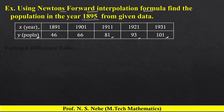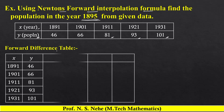इस example में हमें Newton's forward interpolation का formula use करके population find out करना है, means value of y find out करनी है in the year 1895. 1895 की value हमारे table के starting की value है, इसलिए हमें Newton's forward interpolation formula apply करके इस example को solve करना है। सबसे पहले हम यहाँ पर forward difference table create करेंगे।